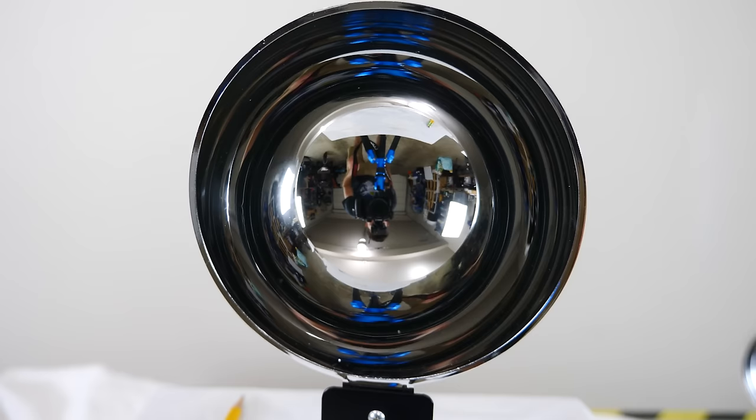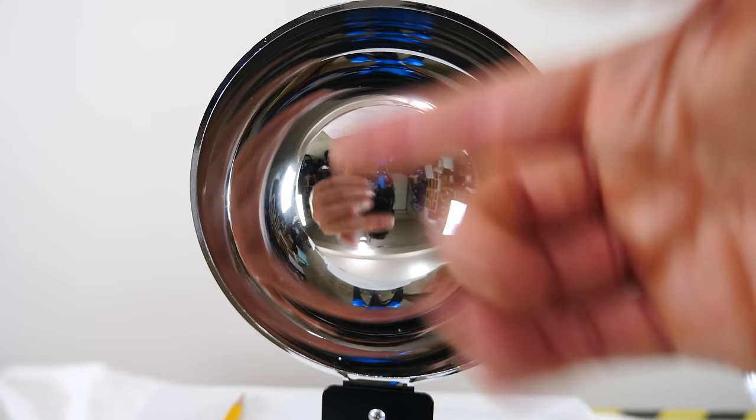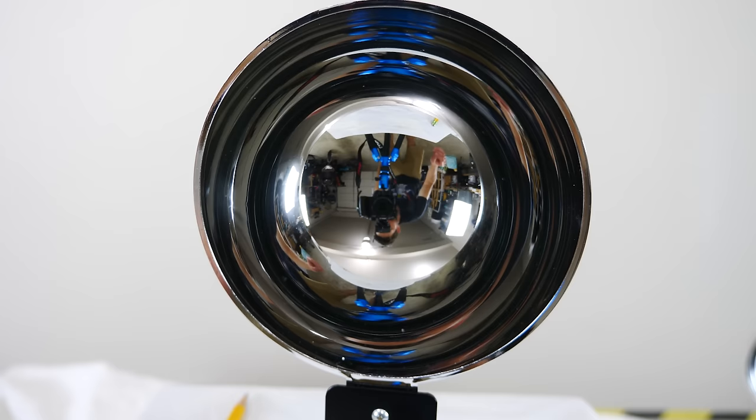So the first thing to notice is that inside of the hemispherical mirror, the very center of it seems to be the brightest, whereas the edges seem to just be dark. So it seems like the middle of it is most reflective and the sides aren't really that reflective.